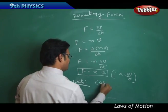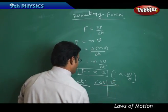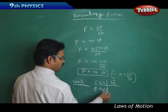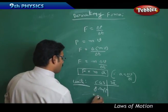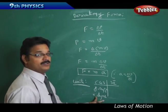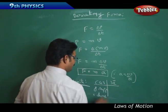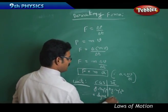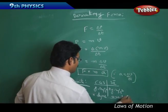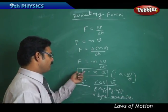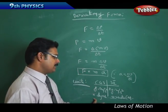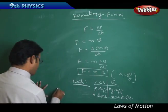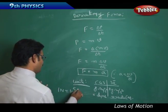Now let's look at the units of force in CGS and SI systems. In CGS, mass is in grams and acceleration is in centimeter per second squared, so force is in gram·cm/s², which is also called a dyne. In SI, mass is in kilograms and acceleration is in meter per second squared, so force is in kg·m/s², which is called a Newton. The relationship between them is: 1 Newton = 10⁵ dynes.